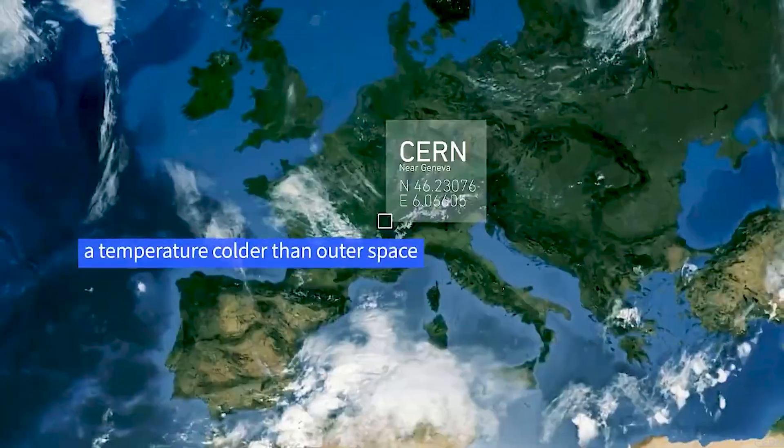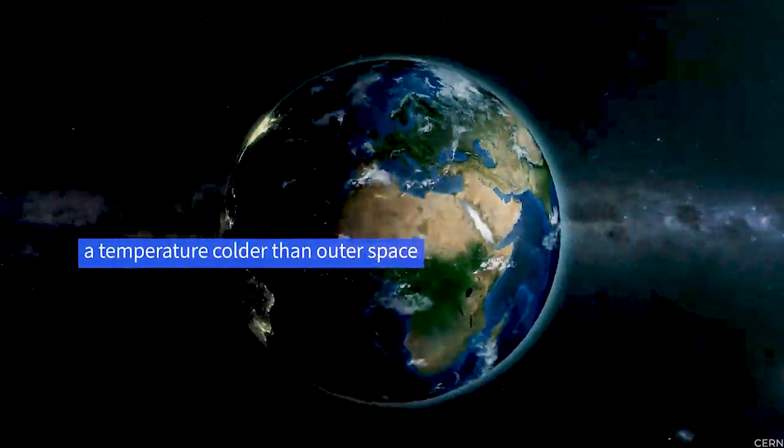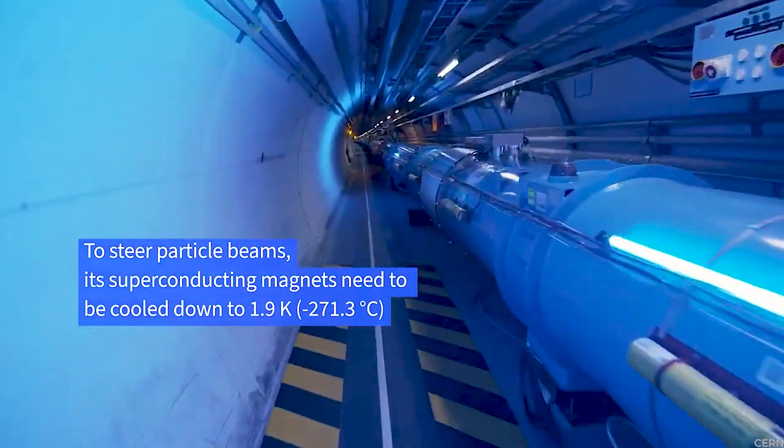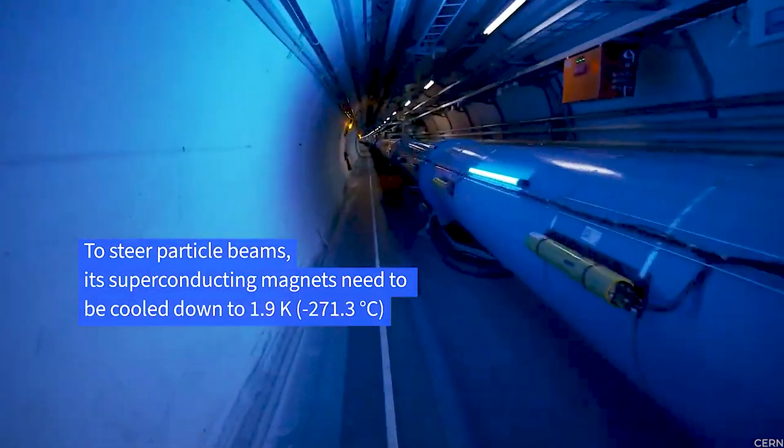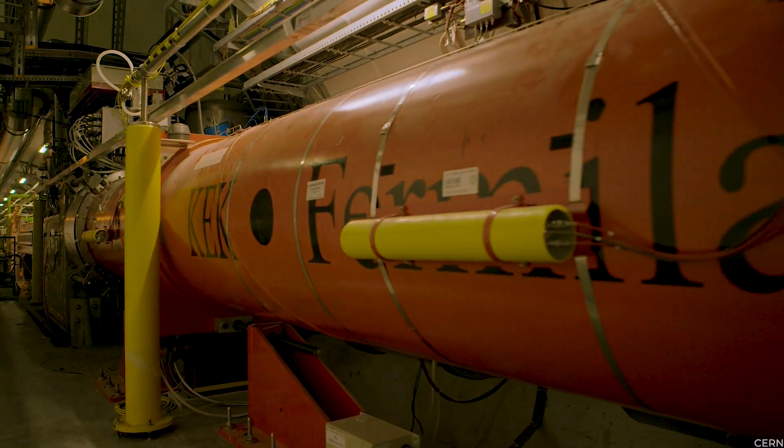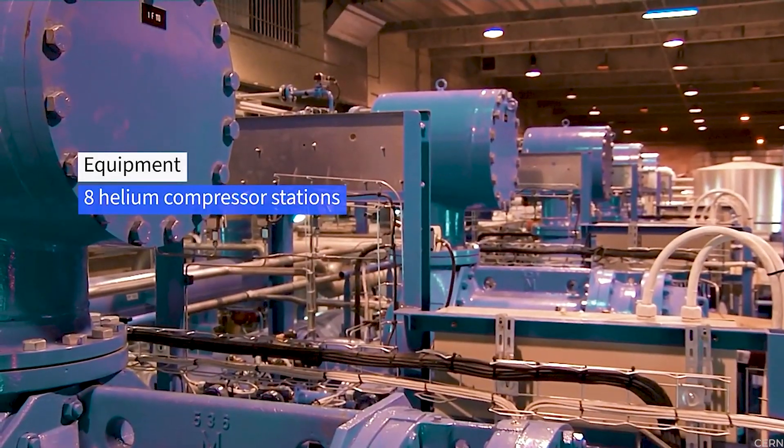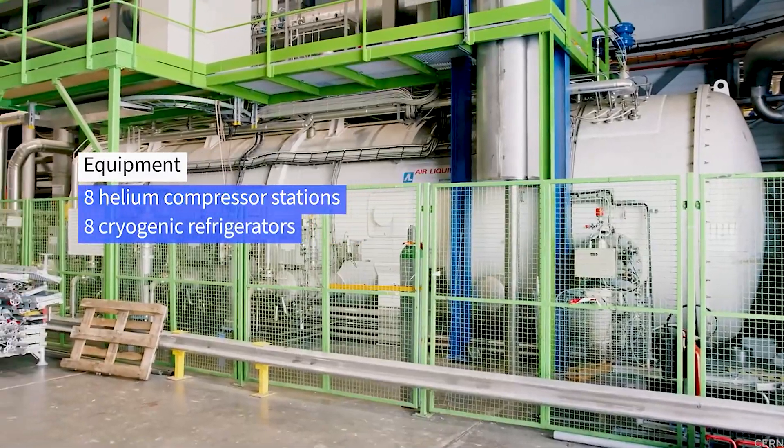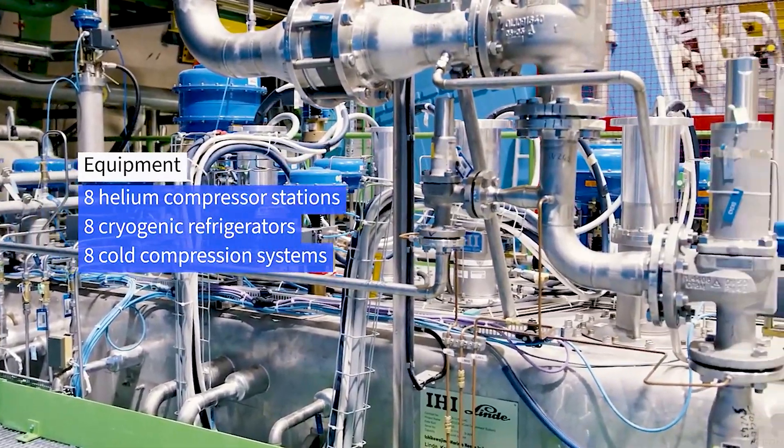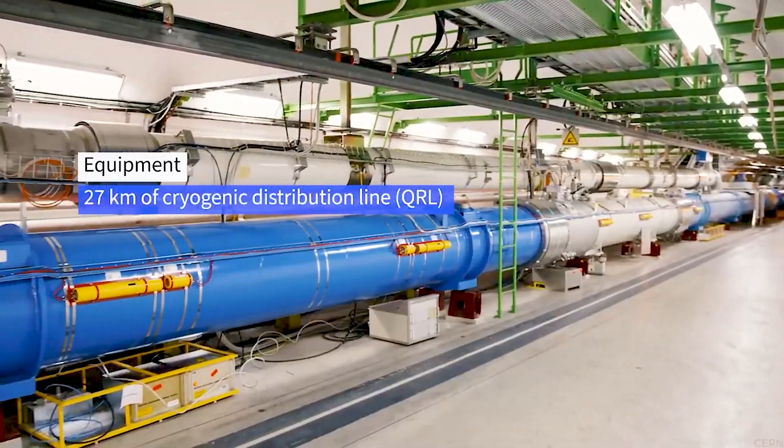Interestingly, this beast is colder than outer space itself. Can you imagine a temperature of 1.9 Kelvin, which is minus 271.3 degrees Celsius? That's like super-duper freezing, almost absolute zero. The LHC has a cryogenic cooling system that keeps it chilling at this frigid temperature. Why? Well, it's all for the sake of those incredible super-conductor electromagnets.